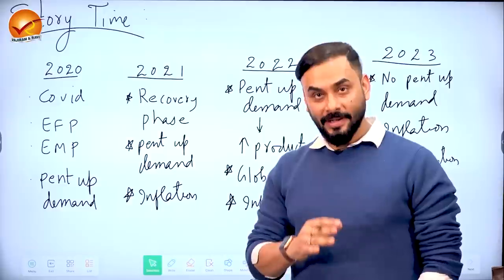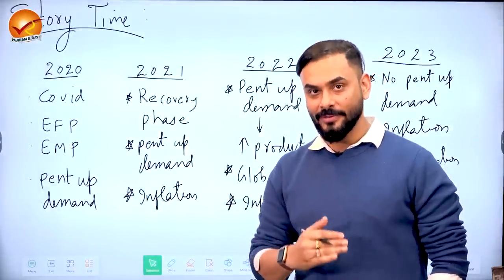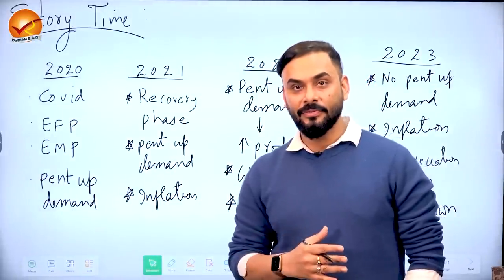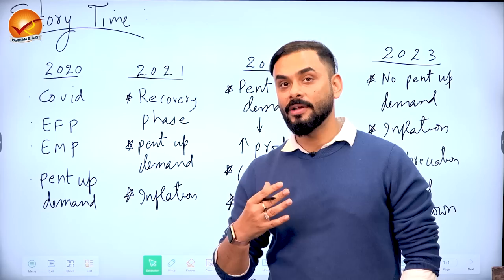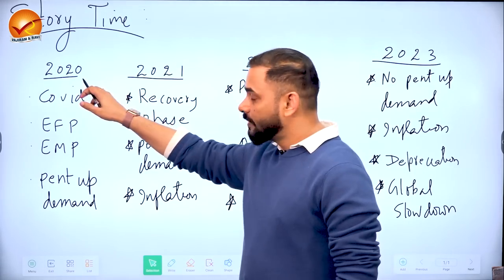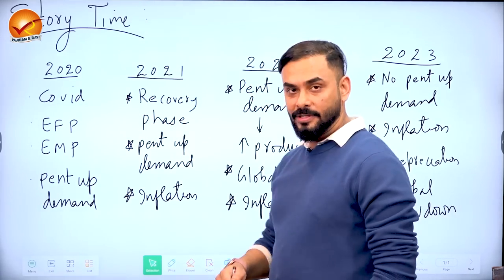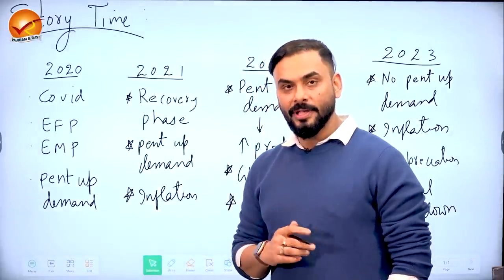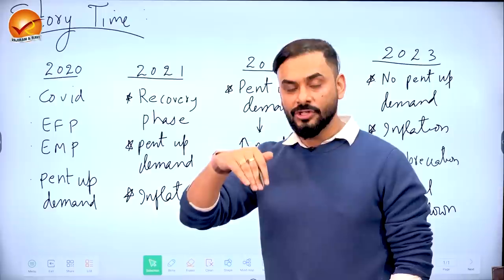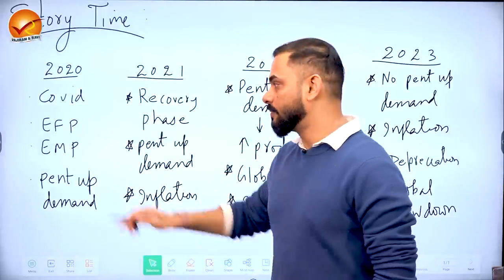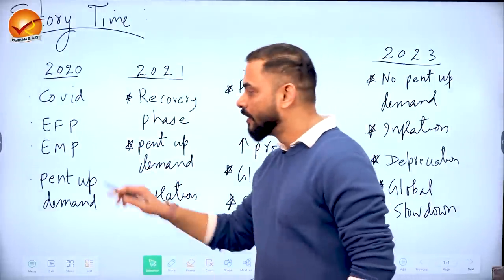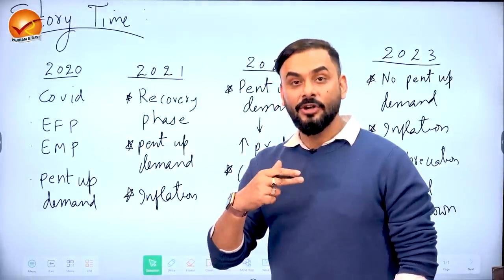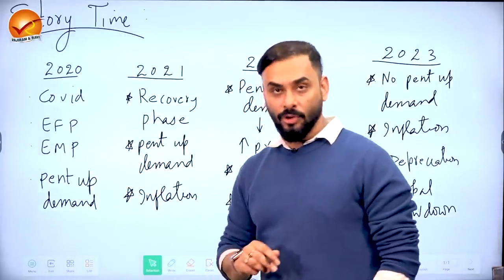Let me tell you what has happened in the world since COVID began. In 2020, during the COVID crisis, governments worldwide reduced taxes and provided more subsidies — expansionary fiscal policy. Central banks also reduced interest rates and gave more money to people — expansionary monetary policy. During COVID, people spent money mostly on health and suppressed all other desires.